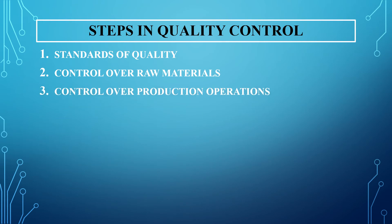The third step is control over production operations. The production process and operations must always be kept under control. The methods decided by the organization should be standardized and carried out in consultation with the engineers and designing departments. A proper method of production — tested and developed with consultation of engineers and designers — should be in place. This can be very well done through automation, which enables proper control over the production process, helps in controlling cost and increasing production, and results in fewer errors.